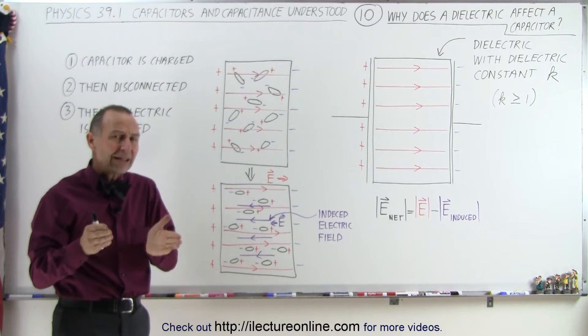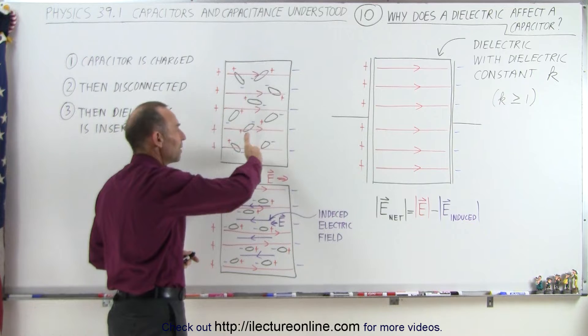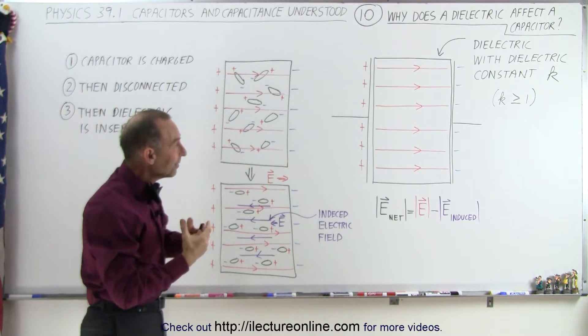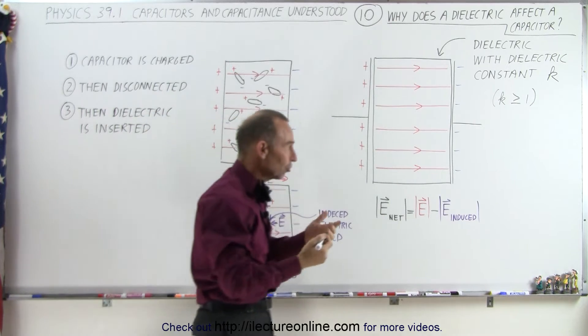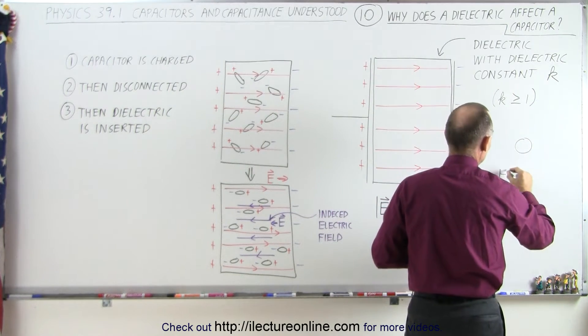So how does that affect the capacitor? Well, first of all, we need to realize that a dielectric material is made out of atoms and molecules, and typically those molecules tend to be polar in nature, just like a water molecule that has one oxygen and two hydrogens.